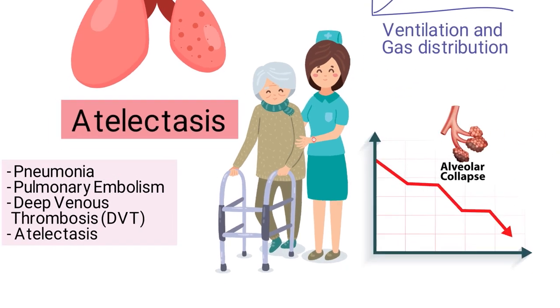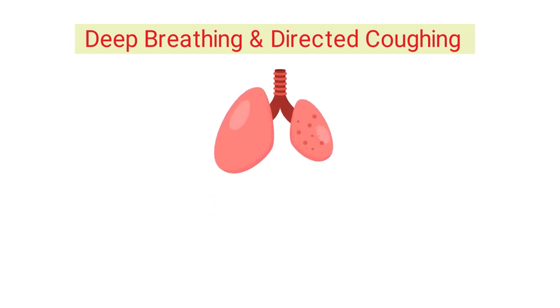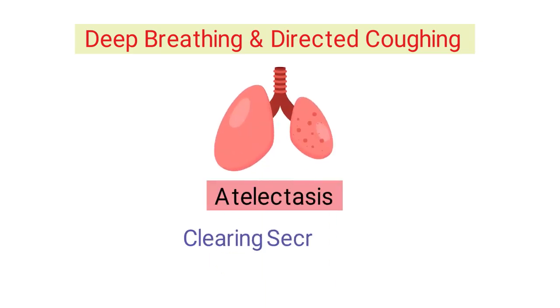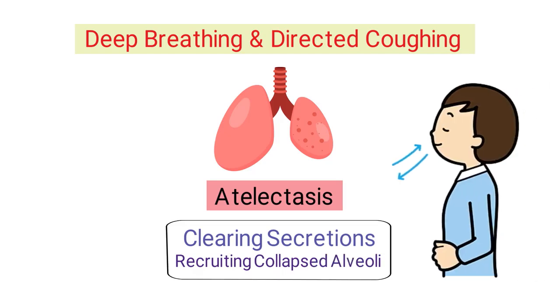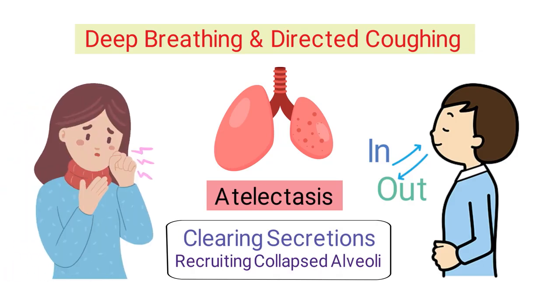Deep breathing exercises and directed coughing can help treat patients with atelectasis by clearing secretions and recruiting collapsed alveoli. Patients who are able to do deep breathing exercises on their own can be instructed to take slow deep breaths in through the nose and out through the mouth, then follow up with a forceful cough. Patients who are unable to cough will need to use a different treatment method.